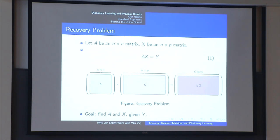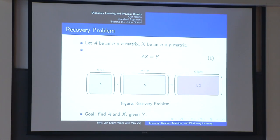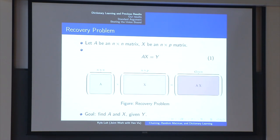The general recovery problem, which dictionary learning falls under: imagine we're given an n by p matrix Y, and we know that it's the product of an invertible matrix A and an n by p matrix X. The question is, given Y, can we recover A and X? In general there are n times p equations but n squared plus n times p unknowns, so the problem is underdetermined in general.